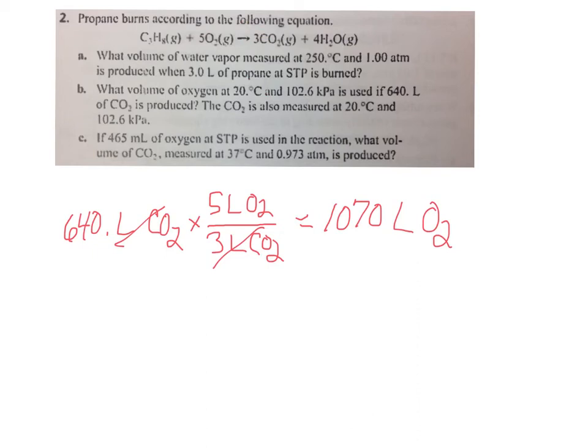So that could be one liter at a given temperature pressure reacts with five liters to give three liters and four liters. Now, it only works also for gaseous reactants and products, but that's a big time saver if you make that connection. You could do the other steps, but the liters would cancel out. So let's just go on to C and finish up this problem.